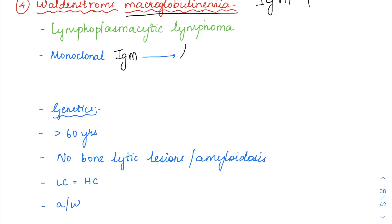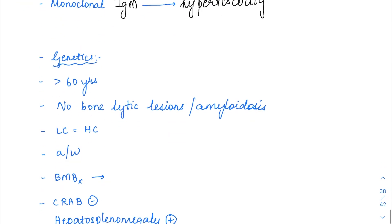IgM is known for causing hyperviscosity. Being a pentamer, it can lead to significant hyperviscosity, and because of this hyperviscosity we are going to develop multiple symptoms.